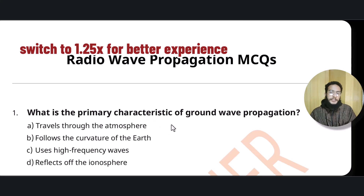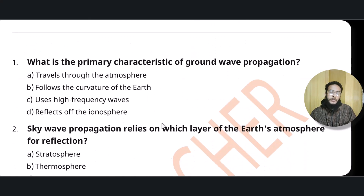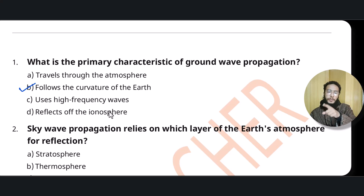The first question: what is the primary characteristic of ground wave propagation? Ground wave propagation follows the curvature of the Earth. These waves propagate along the contour of the Earth — they follow the curvature of the Earth.